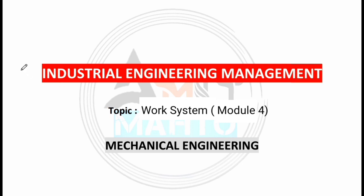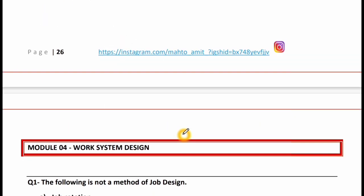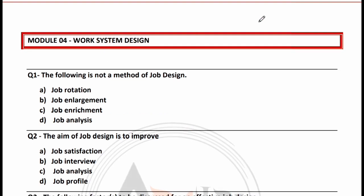Hello friends, welcome back to my YouTube channel. Today we will learn Industrial Engineering Management, and in this subject we will learn Work System Design, which is Module Number Four. The following is NOT a method of job design: job rotation, job enlargement, job enrichment, or job analysis. The right answer is option D, which is job analysis.